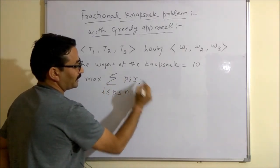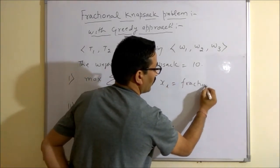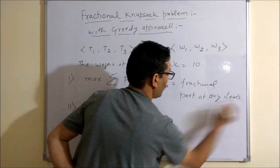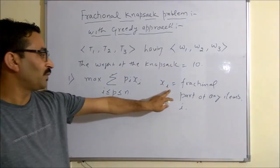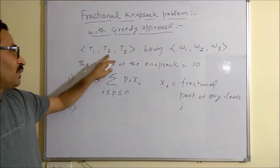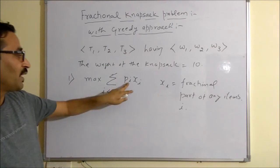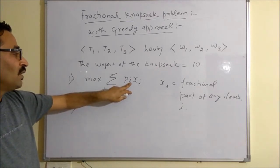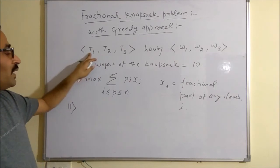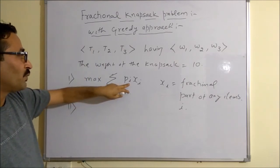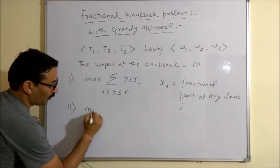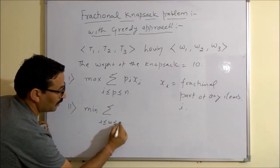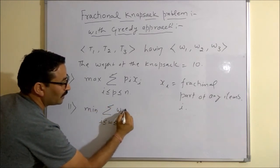Here, the objective is to maximize the sum of PI times XI, where XI is the fractional part of any item I. XI can be the fractional part of T1, T2, or T3. PI is the profit associated with T1, T2, or T3, depending on the value of I. If I equals 1, then P1 is the profit of T1; if I equals 2, then P2 is the profit of T2. You also want to minimize the weight WI times XI.